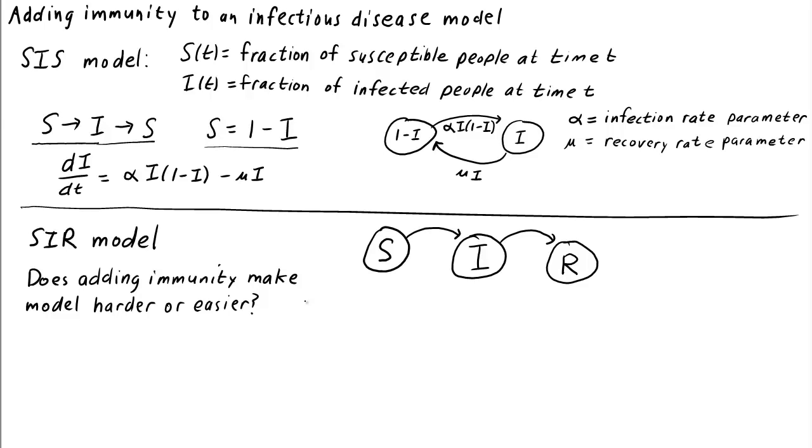Does adding immunity to the model make the analysis of the model harder or easier? Well, now we have another state variable, R. We need to know the fraction of people who are removed at time t. Where removed could be recovered or dead, depending on the disease we're modeling.